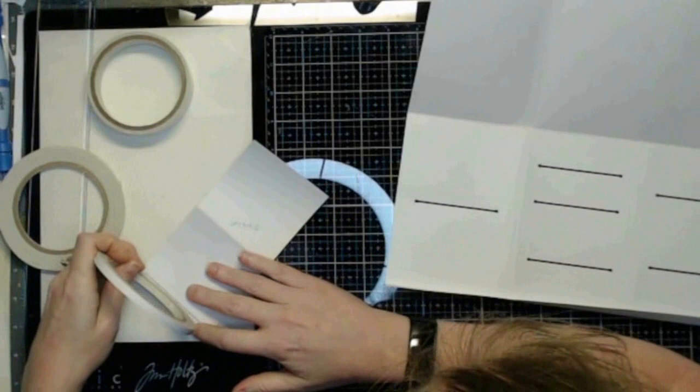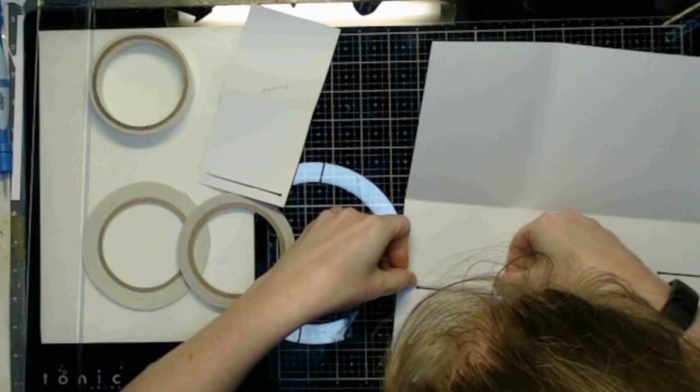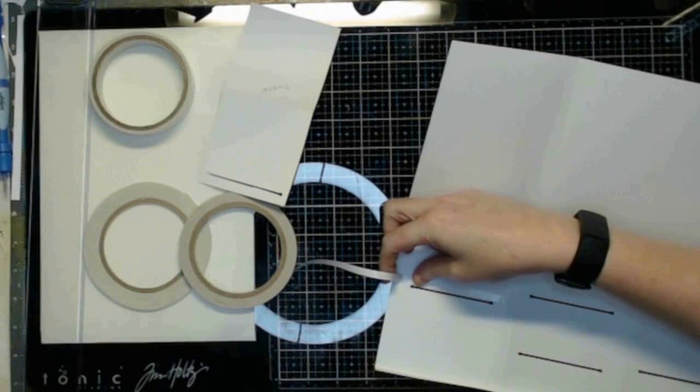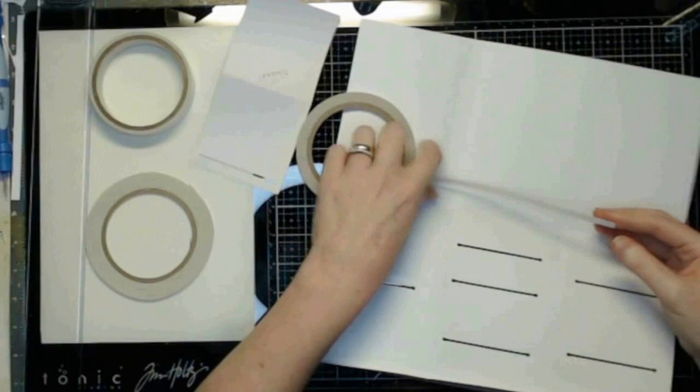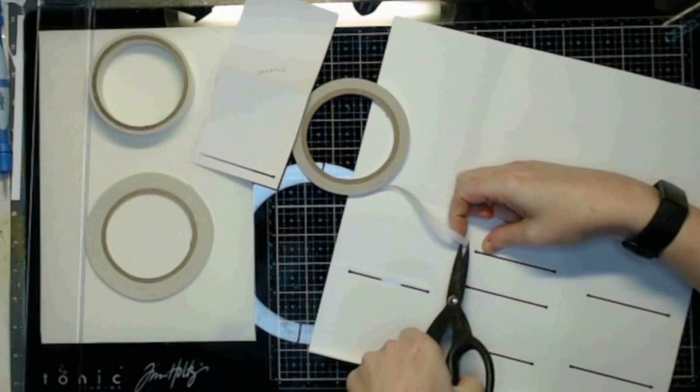This is quarter inch double sided tape and I line it up just above the tops of the holes, on the top and just below them on the bottom, just to get a nice seal at that opening. So to start, I just go through, I add my double sided tape, just to kind of speed up the process instead of doing totally one pocket at a time.